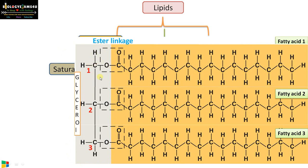Glycerol is a three carbon compound, and each carbon is bonded to a fatty acid — fatty acid one, fatty acid two, and fatty acid three — by ester linkage. So neutral glycerides are non-polar, made up of a glycerol backbone to which three fatty acids are joined by ester linkage.